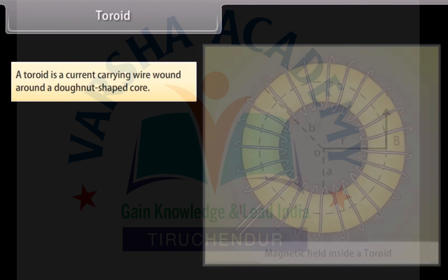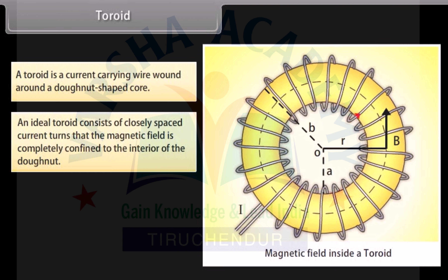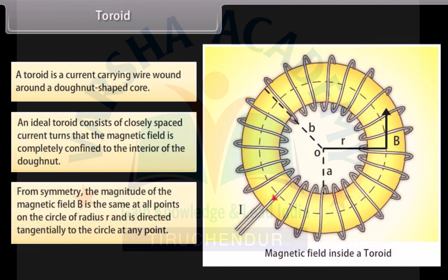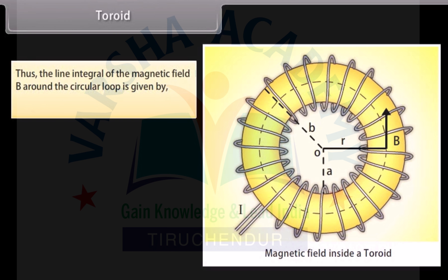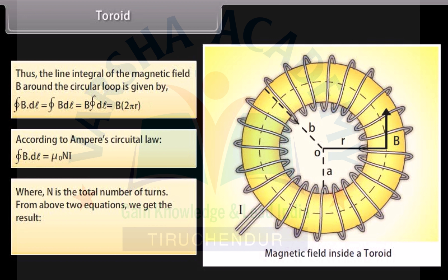A toroid is a current carrying wire wound around a donut-shaped core. An ideal toroid consists of closely spaced current turns such that the magnetic field is completely confined to the interior of the donut. By symmetry, the magnitude of B is the same at all points on a circle of radius R and is directed tangentially. The line integral of B around the circular loop equals B times 2πR. By Ampere's Circuital Law, the closed integral equals mu₀ N I, where N is the total number of turns. This gives B = mu₀ N I / 2πR.